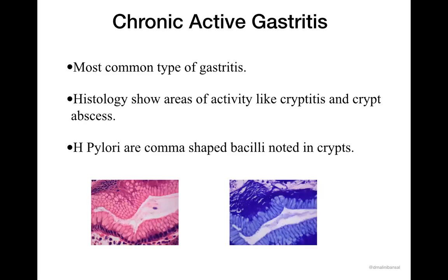With the normal gastric mucosa covered, we now move on to the pathologies of the stomach. The commonest pathology usually seen in the stomach is chronic active gastritis. Chronic active gastritis is the most common type of gastritis seen in the stomach. Histologically, we say 'active' because it shows features of activity — that is cryptitis and cryptepsis. H. pylori is commonly identified within the crypts as comma-shaped bacilli present within the crypts.